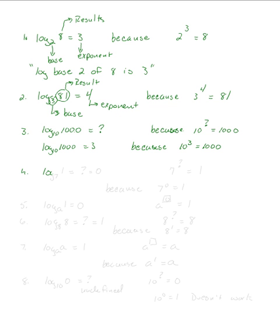Log base 7 of 1 equals what? When I say log base 7 of 1, I'm asking: 7 raised to what power gives me 1? The answer is 0, because 7 to the 0 power is 1.